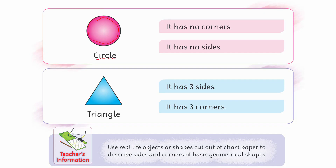अब round shape आती है — round shape को हम circle कहते हैं। जब दो sides आपस में मिलें तब corner बनता है, लेकिन circle में कोई side मिलती ही नहीं। इसमें कोई side है ही नहीं — एक line को घुमाते हुए उसी से join कर दिया। इसका मतलब है इसका कोई corner नहीं — it has no corners, it has no sides।